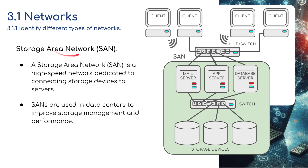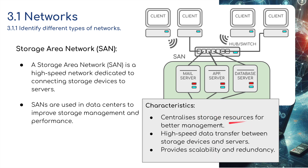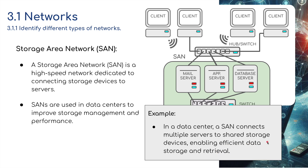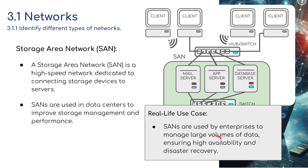A SAN — storage area network — is a high-speed network dedicated to connecting storage devices to servers. SANs are used in data centers to improve storage management and performance. Here you can see a mini LAN network connected to a mail server, an app server, and a database server, which in turn connects to a switch where lots of data can be stored in these data repositories. Characteristics: centralizes storage resources for better management, high-speed data transfer between storage devices and servers, and provides scalability and redundancy. SANs are used by enterprises to manage large volumes of data, ensuring high availability and disaster recovery.